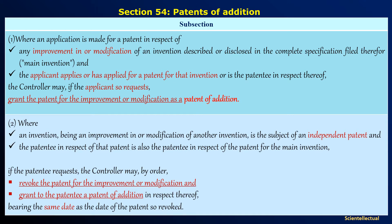Say an applicant files a patent application. He will be the applicant before grant, and he will be termed as patentee if the application has been granted. Now, either as an applicant or as a patentee, he improves or modifies his invention and files another patent application. The first one will be the main invention. Now, if he requests the controller in the proper way, the controller may grant the patent of improvement or modification as a patent of addition.